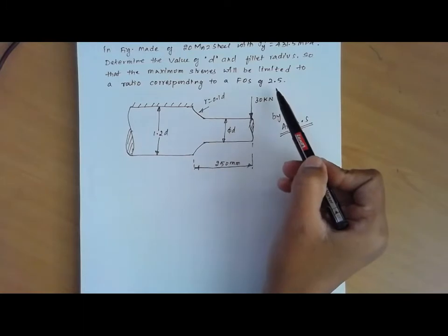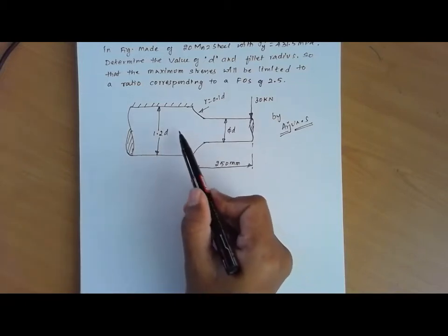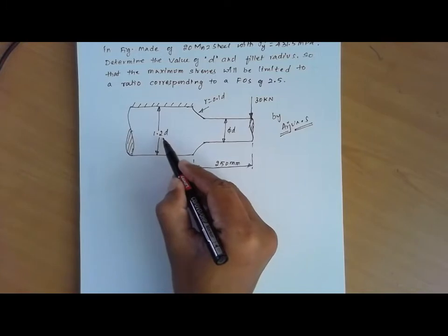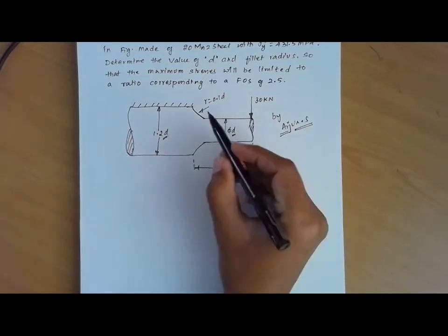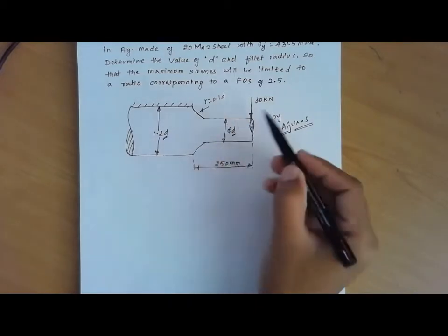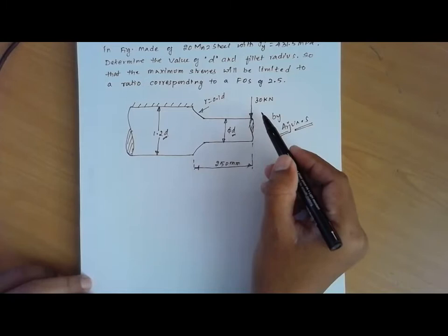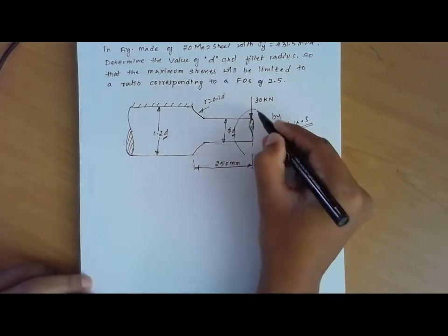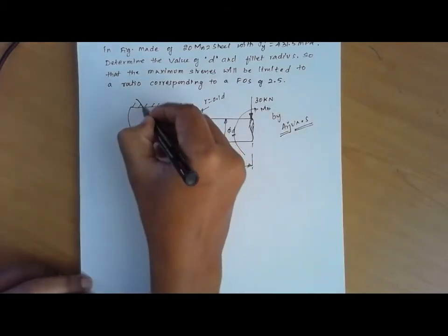This is a given problem and this is the diagram. We have a stepped shaft of varying cross sections — the bigger cross section is 1.2D and the smaller cross section is D, with a fillet radius of 0.1D. It is subjected to a transverse load. When a material is subjected to a transverse load, it induces bending in that particular member.